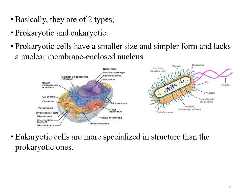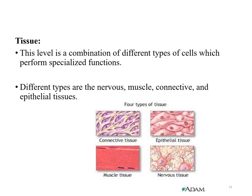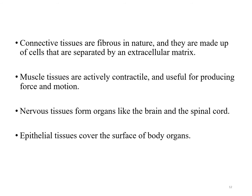In multicellular life forms, cells of a similar type combine to form tissue and perform a particular function. The cells in a tissue may all be the same type or they may be of different types; in either case they work together to carry out a specific function. For example, nervous, muscle, connective, and epithelial tissues. Connective tissues are fibrous in nature and made up of cells separated by an extracellular matrix. Muscle tissues are actively contractile and useful for producing force and motion. Nervous tissues form organs like the brain and spinal cord, while epithelial tissues cover the surface of our body.